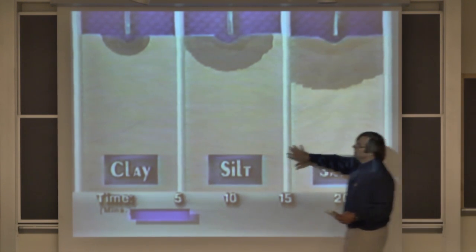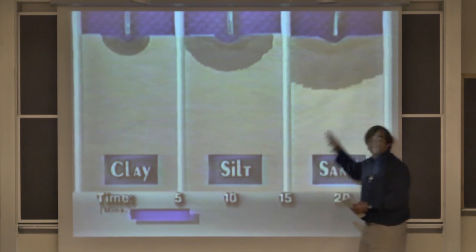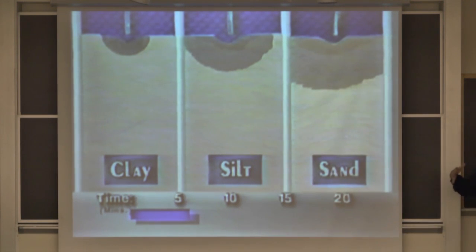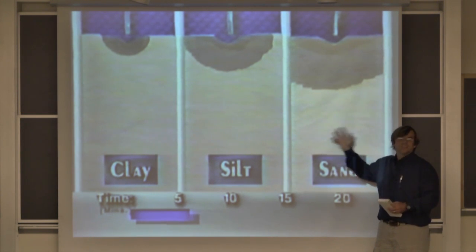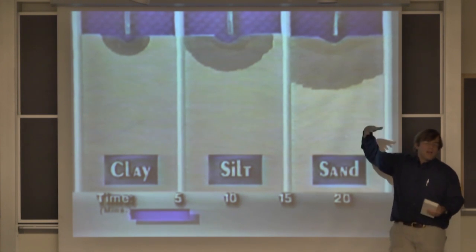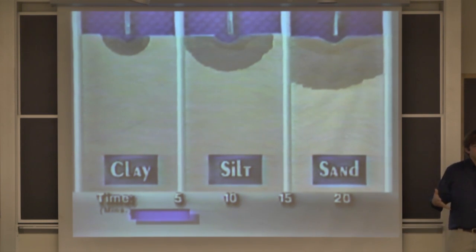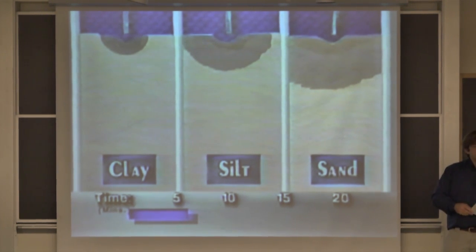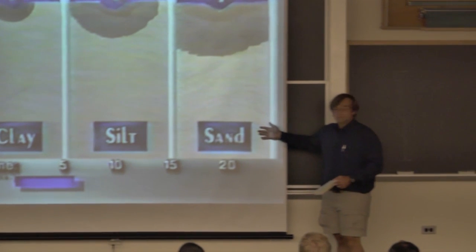Basically, what you're seeing here is clay, silts, and sands. They're feeding water from the top, and we're seeing mass flow because there are no imperfections in this — this is pure stuff. So I start adding water at the surface. What do you expect is going to happen? You're going to see a wetting front. And that wetting front is going to be moving based on the porosity of the material — coarse porosity, fine porosity.